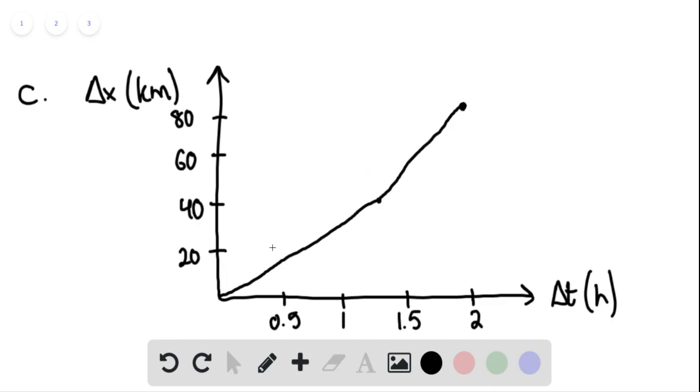And then to find the average velocity, it'll simply be taking this slope, the secant slope between the origin and our final position. So the slope of that graph is going to be 40, or in this case, 40 kilometers per hour.